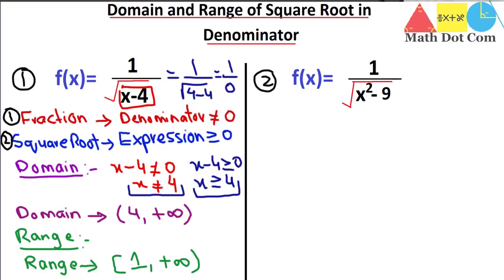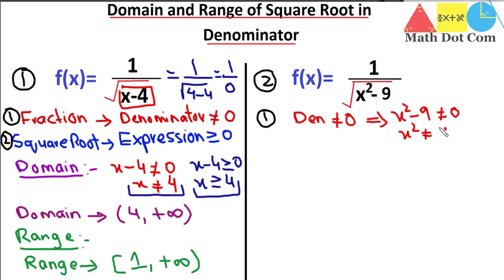Moving to the next example, we apply both conditions again. For condition one — denominator should not equal zero — the denominator is x² − 9. So x² − 9 ≠ 0, meaning x² ≠ 9, and taking the square root of both sides: x ≠ ±3. Now applying condition two: the expression under the square root should be ≥ 0, so x² − 9 ≥ 0.